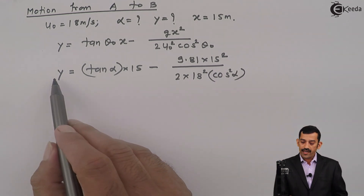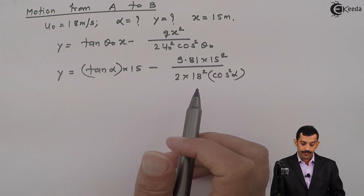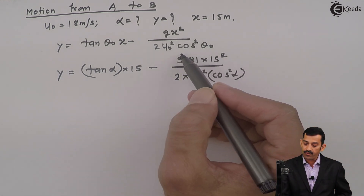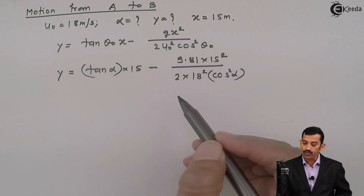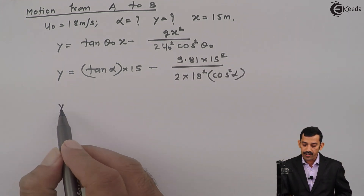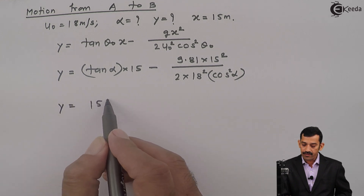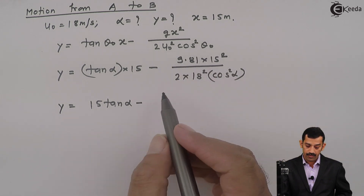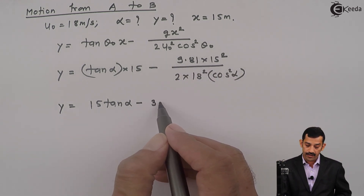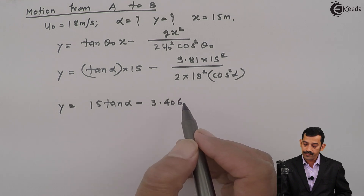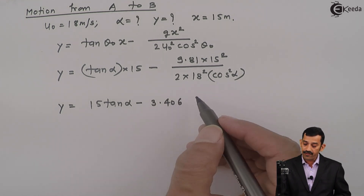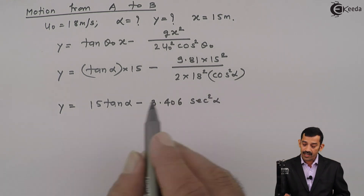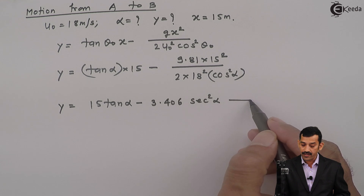Computing the constant: 9.81 × 15² / (2 × 18²) = 3.406. This simplifies to y = 15·tan(alpha) − 3.406·sec²(alpha). This is our equation of y in terms of alpha — call it Equation A.